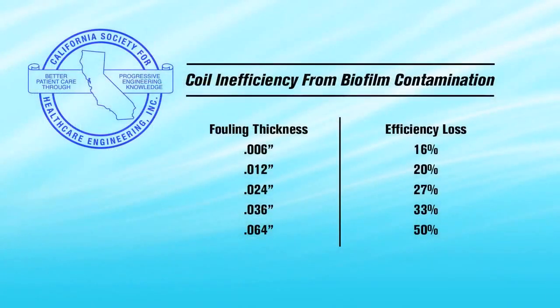According to the California Society for Healthcare Engineering, it only requires a 1.5 millimeter fouling on the coil fins, 0.006 of an inch, to reduce the coil's efficiency by 16%.